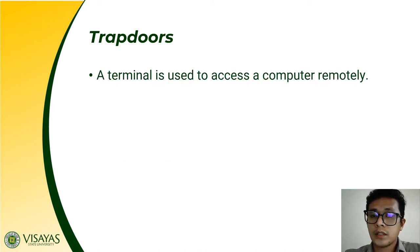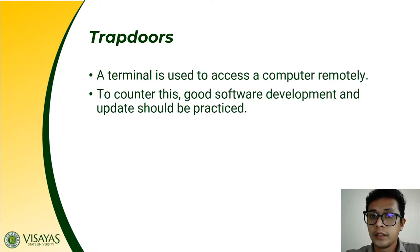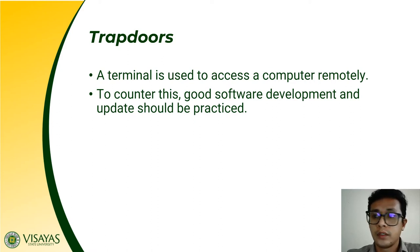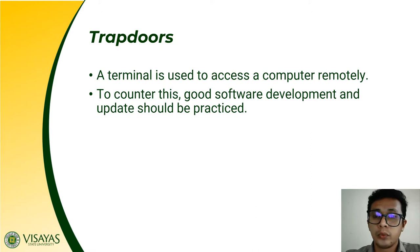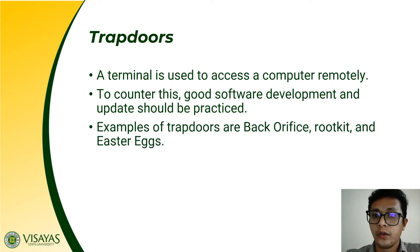To gain access to a specific program, the attacker uses a terminal — just like a command-line interface of an operating system which allows you to connect to another computer located in a different place. To counter this trapdoor, good software development and updates should be practiced. It is always recommended that users always update their programs to patch different security holes in the system. Examples of trapdoors are Back Orifice, Rootkit, and Easter Eggs.